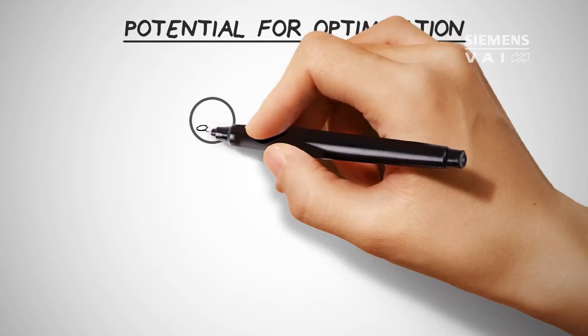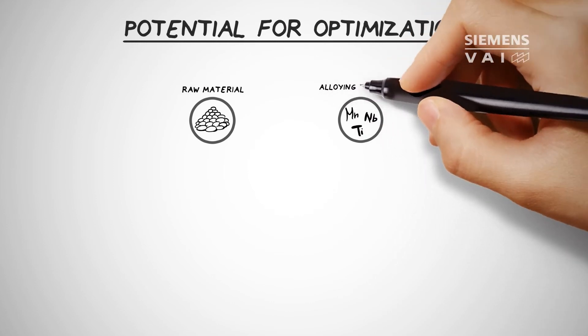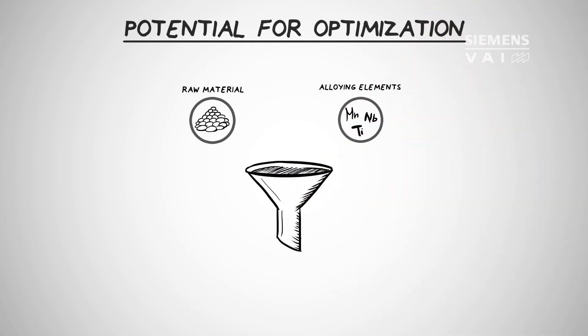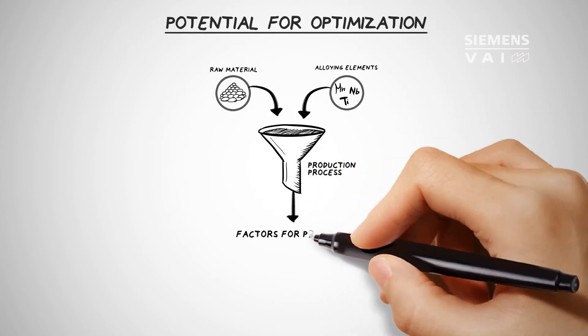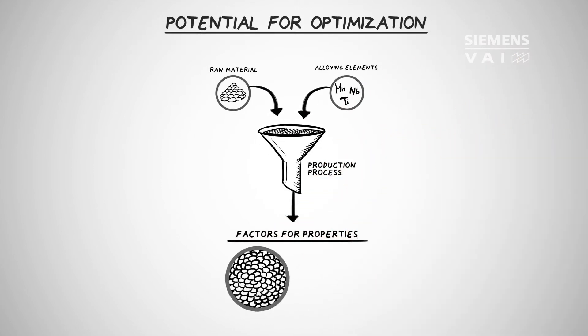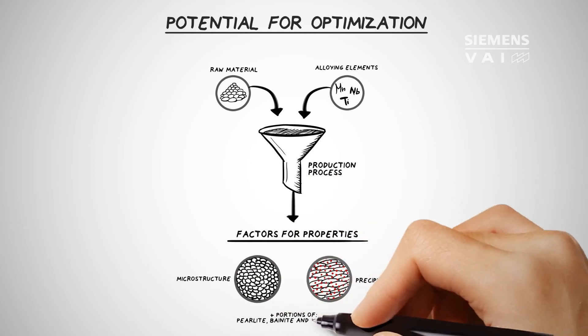This is because the mechanical properties and quality of steel are determined both by chemical composition and the production process employed. The defining factors for the properties of high strength steels are ferrite grain size, precipitates and the percentages of other phases such as pearlite, bainite and martensite.